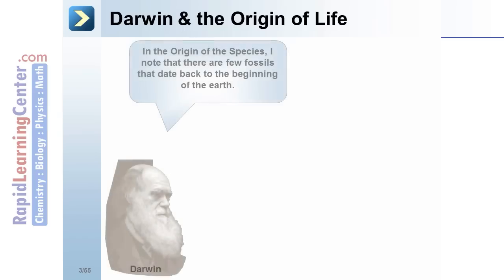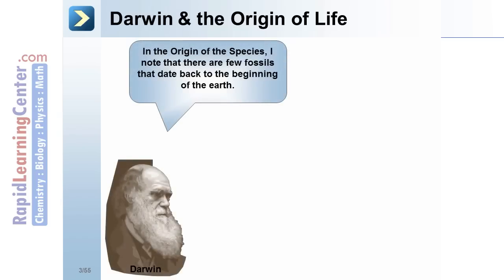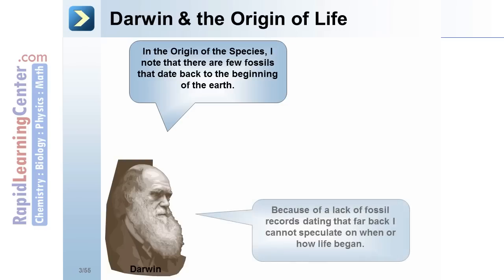Darwin and the origin of life: in On the Origin of Species, Darwin noted that there are few fossils dating back to the beginning of the Earth. Because of the lack of fossil records dating that far back, he could not speculate on when or how life began.